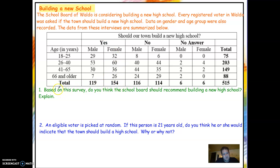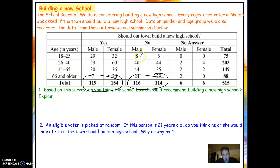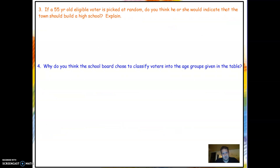So in your columns: based on the survey, do you think the school board should recommend building a new high school? All you have to do is look at the totals — these two are going to be more than these two, so the answer is yes. An eligible voter is picked at random and is 21 years old, so we only look at that category. Clearly in the 21-year-old group, there are more yeses than noes, so I'm going to say yes.